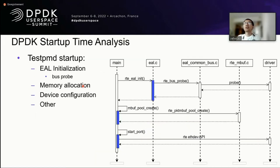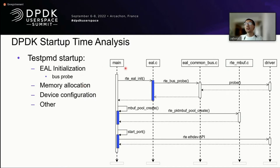Next, we give our analysis of DPDK startup time. We chose testpmd as an example. We list the components that make up startup time: first is EAL initialization, which is the runtime init; then after the runtime, we go to memory allocation such as mbuf, which is typically used for TX/RX queues. After the runtime environment and memory are set up correctly, we start to configure the device, and the remaining parts are listed as 'other'.